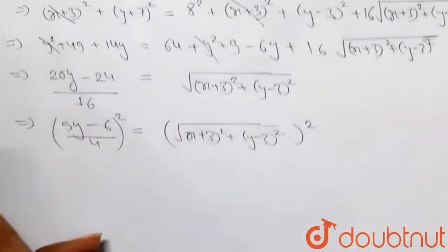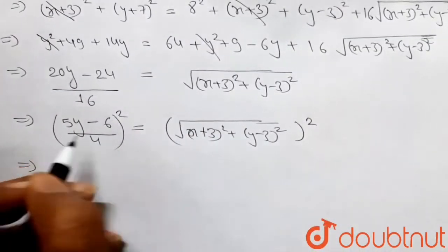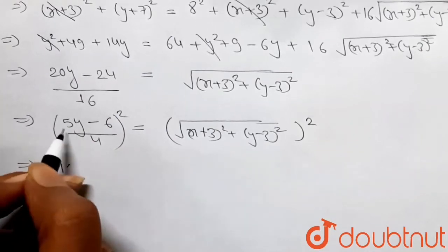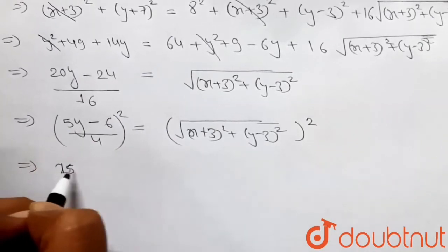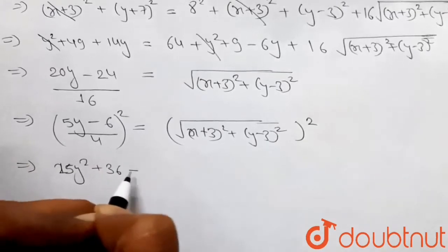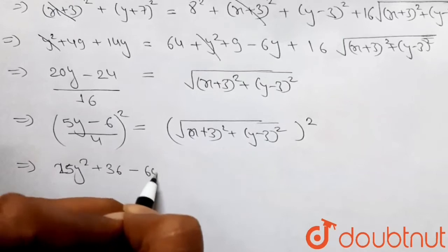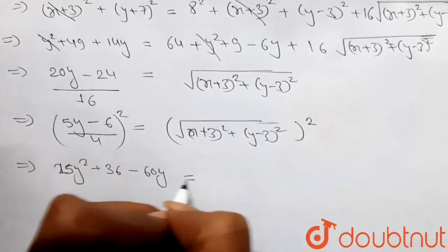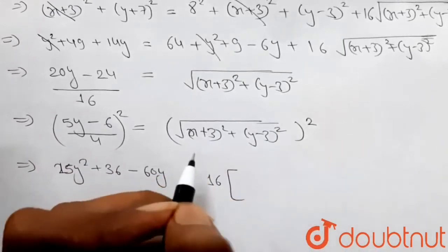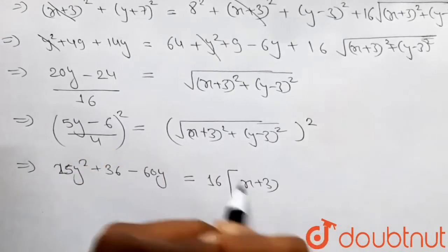Squaring both sides: the left side (5y - 6)²/16 expands to 25y² + 36 - 60y, all over 16. The right side becomes (x+3)² + (y-3)². Multiplying through by 16: 25y² + 36 - 60y = 16(x+3)² + 16(y-3)².